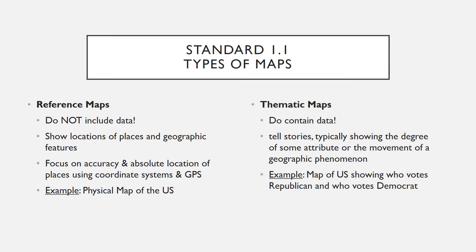The biggest way to remember the difference: reference maps do not include data. They show locations of places and geographical features. An example might be the United States showing physical features like where rivers and mountains are. Thematic maps do contain data. Anytime you're looking at a map that contains data, it's always a thematic map — it has a theme. An example might be a map showing which states vote Republican and which vote Democrat.